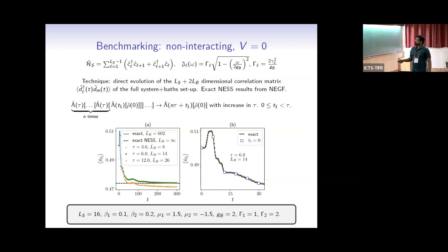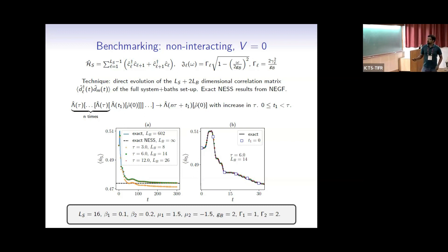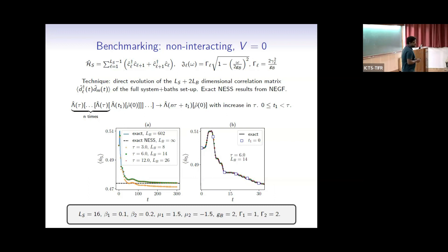This gives results in steps of time τ. To reconstruct all in-between points, you play around with τ₁ and reconstruct the full dynamics. This requires a bath size of about 14, which is even smaller than the system size. The dynamics being reconstructed is the system coupled to infinite-size baths with a continuous spectral function, but we reconstruct it by repeatedly using finite-size baths up to small times.